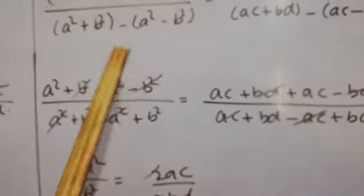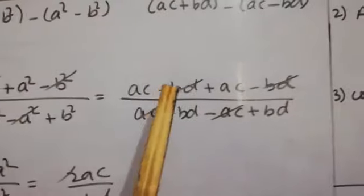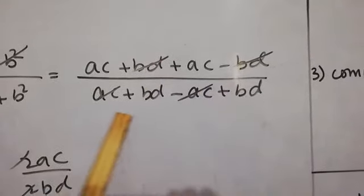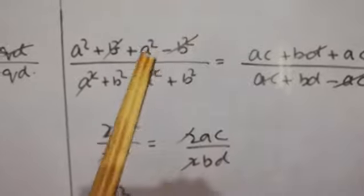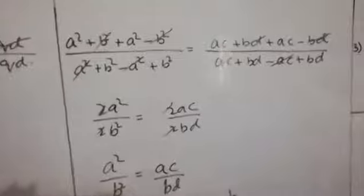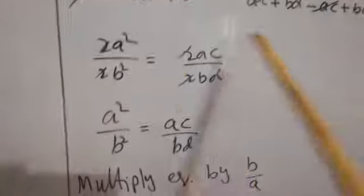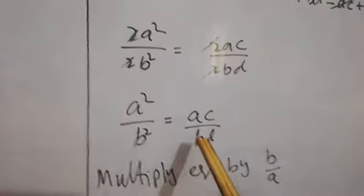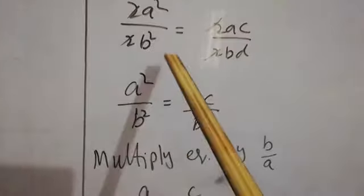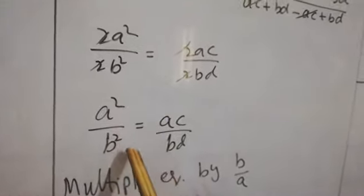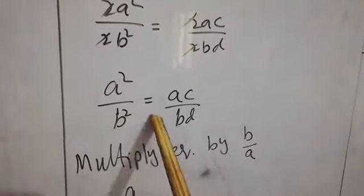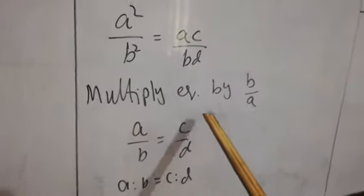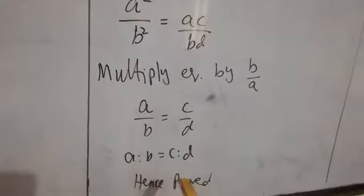After removing brackets and changing signs: B squared cancels with minus B squared, and A squared cancels with minus A squared on the left. On the right, BD cancels with minus BD, and AC cancels with minus AC. We get 2A squared by 2B squared equals 2AC by 2BD. The 2s cancel, giving A squared by B squared equals AC by BD. Multiplying by B by A, B cancels with B and A cancels with A on both sides, giving A by B equals C by D, i.e., A ratio B equals C ratio D. Hence verified.